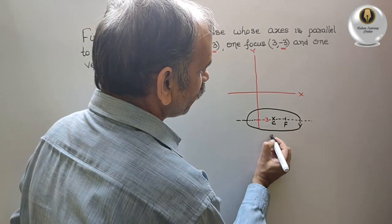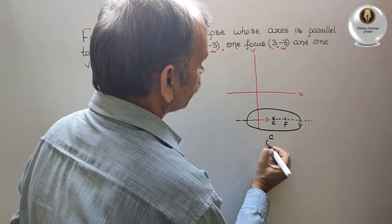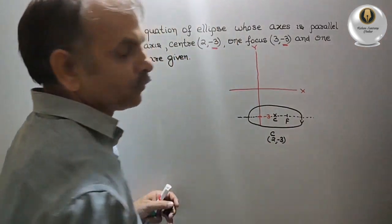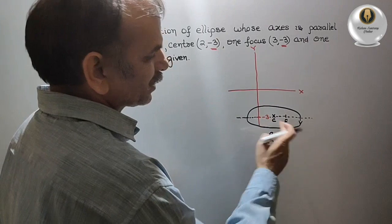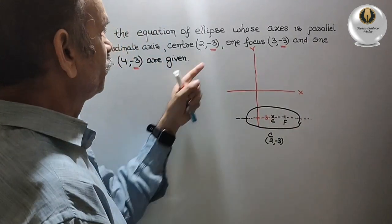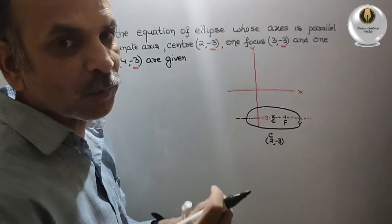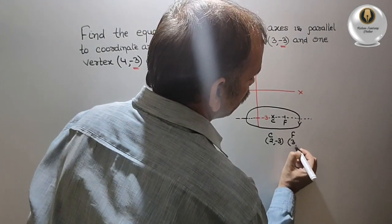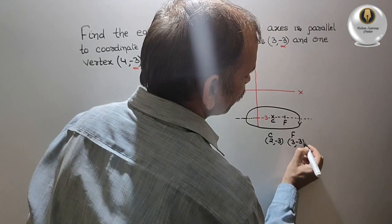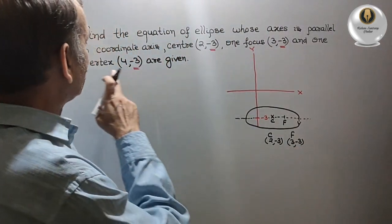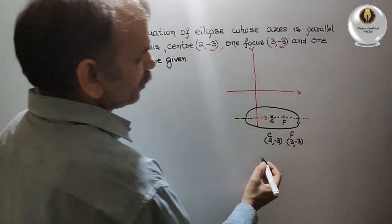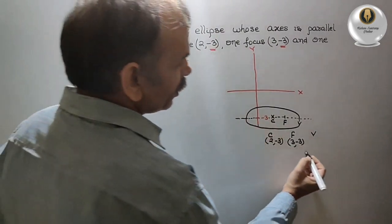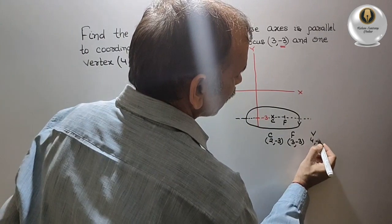The center they have given is (2, -3). The focus they have given is (3, -3). The vertex they have given is (4, -3).